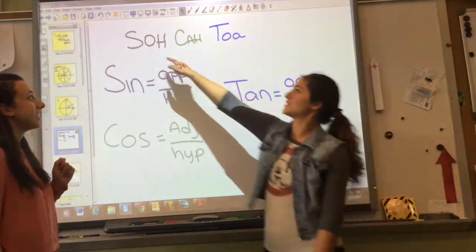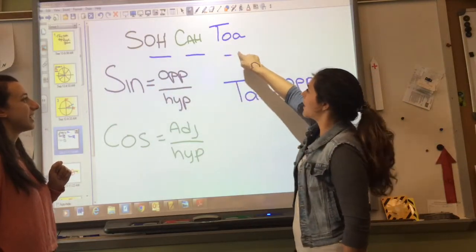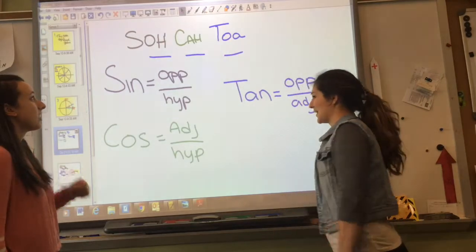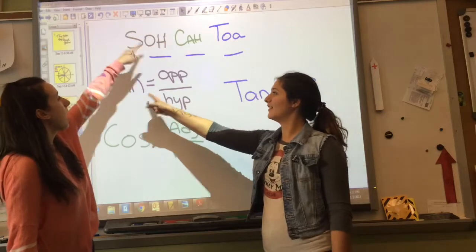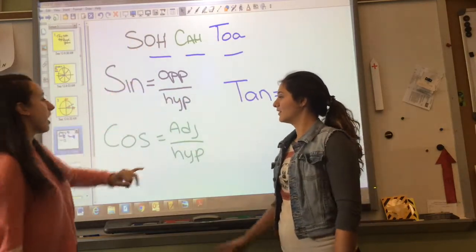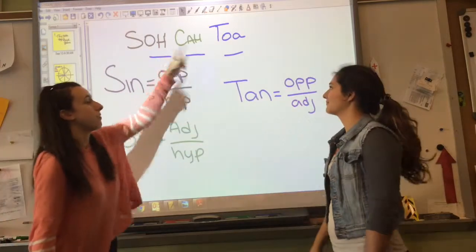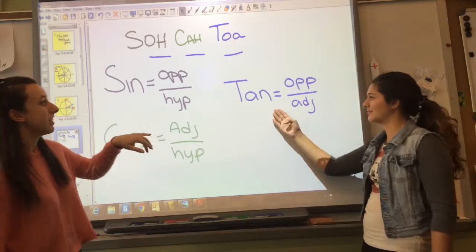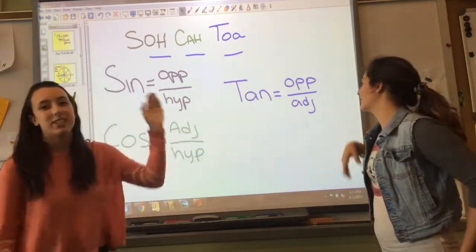So what is SOHCAHTOA? You have your sine equals opposite over hypotenuse. You have your cosine equals adjacent over hypotenuse. Then you have your tangent equals your opposite over adjacent.